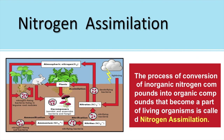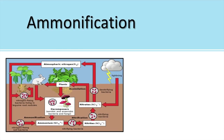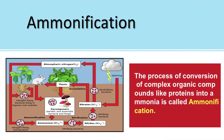The next step is ammonification. Ammonification is the process of conversion of complex organic compounds like protein into ammonia. When plants and animals die, their remains get converted into ammonia or ammonium compounds. This is done by bacteria and fungi that attack the dead matter and convert it into ammonia or ammonium compounds. This process is called ammonification.